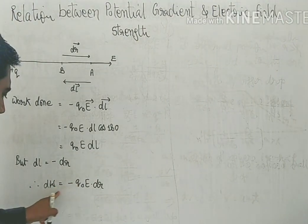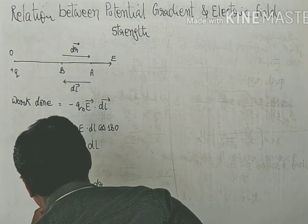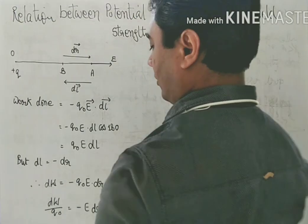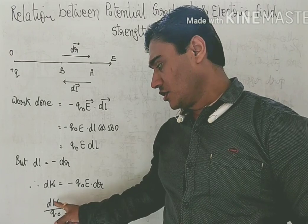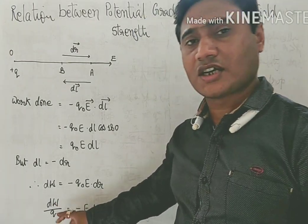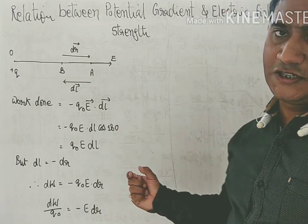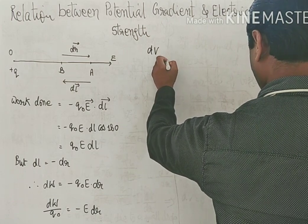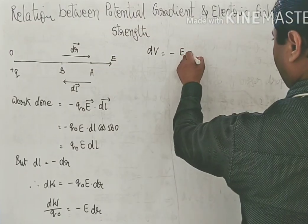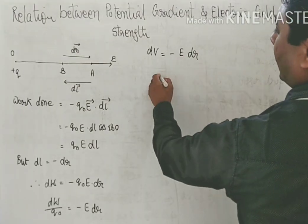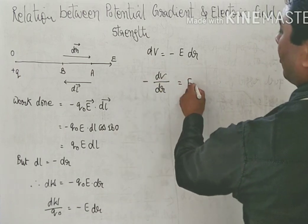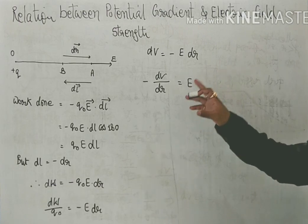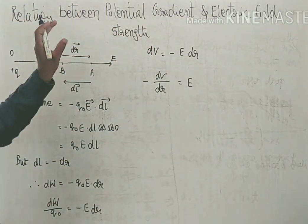Taking Q₀ to the denominator: dW/Q₀ = −E dr. Since work done per unit test charge is the potential difference between two points, dW/Q₀ = dV. Therefore dV = −E dr, which gives E = −dV/dr. This is the relationship between electric field intensity and potential gradient.